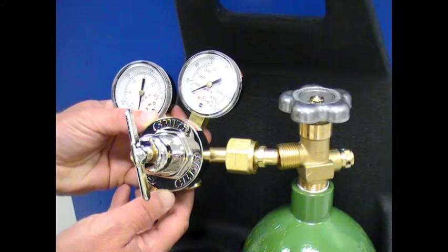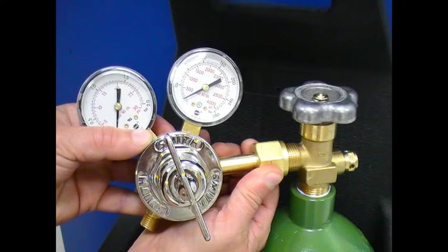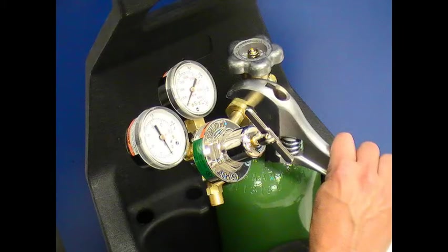The large pressure fitting end of the regulator is inserted into the oxygen tank valve. Tighten the pressure fitting nut clockwise. With a large crescent wrench, tighten fitting.